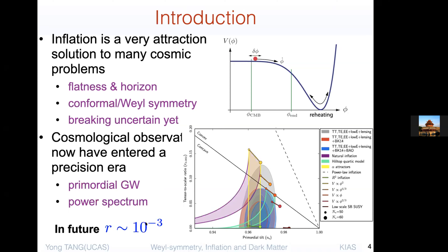The prediction of R-squared inflation for the tensor-to-scalar ratio r is around 10^{-3}. This requires future experiments to reach that sensitivity, since current data are only constrained to about 5×10^{-2} — still about one order of magnitude above the predicted signal. Nevertheless, perhaps in the next 10 to 20 years, experiments can test R-squared inflation.